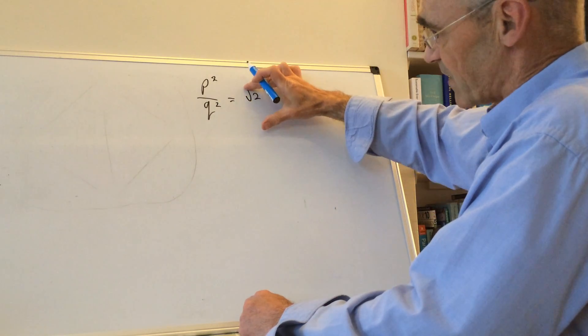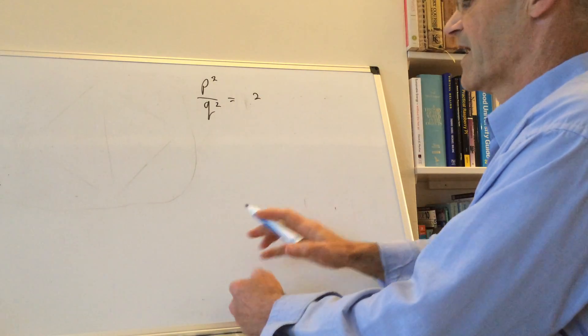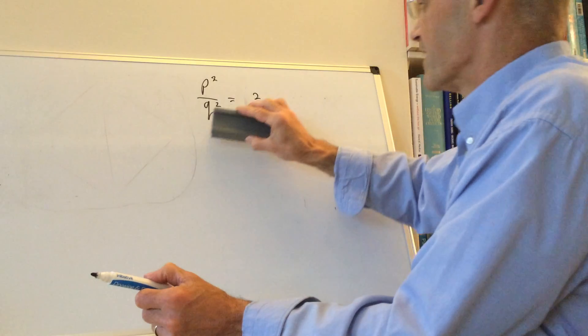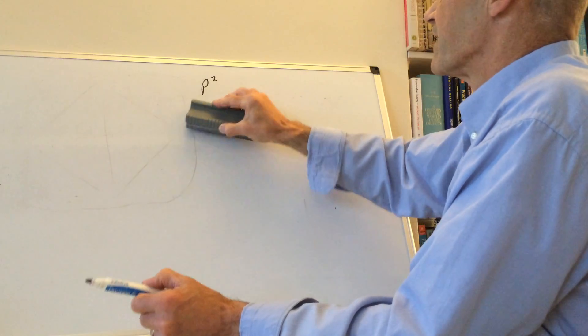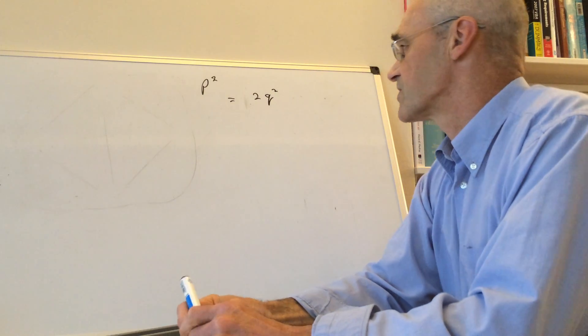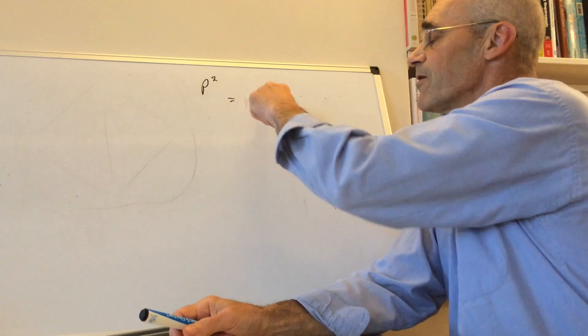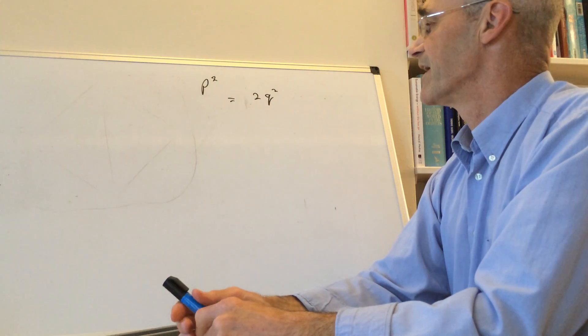And that would be the same as saying that p² is equal to 2q². So if √2 were rational, then there must be two whole numbers such that p² is twice q².